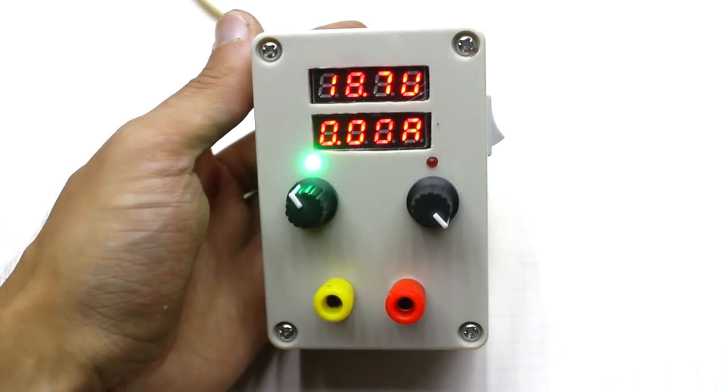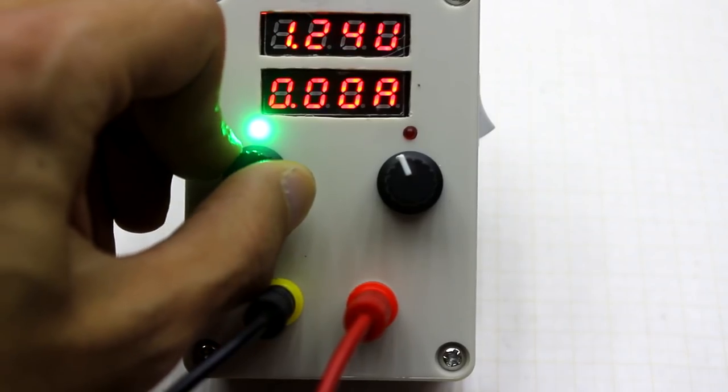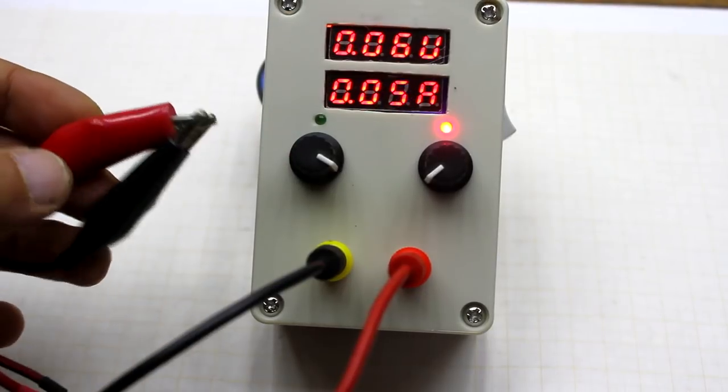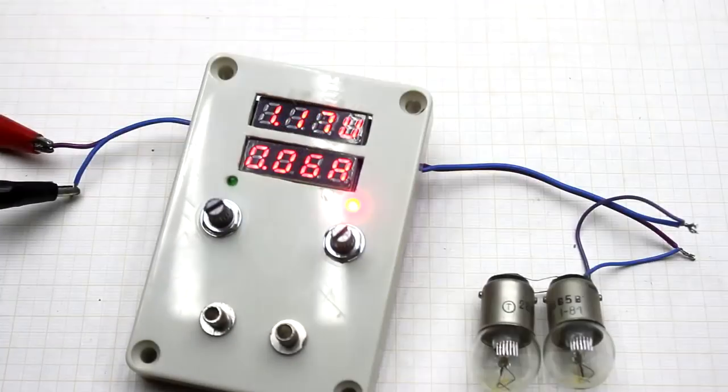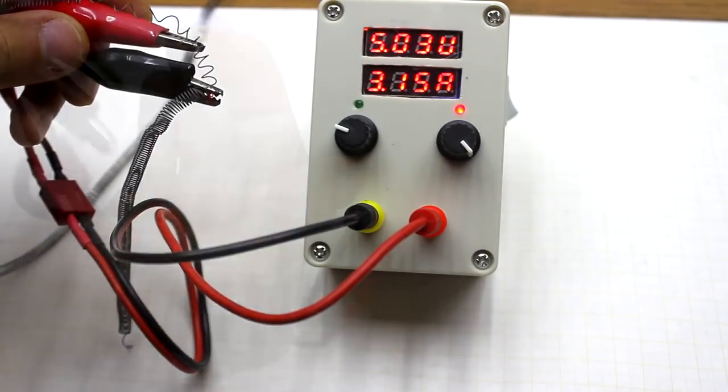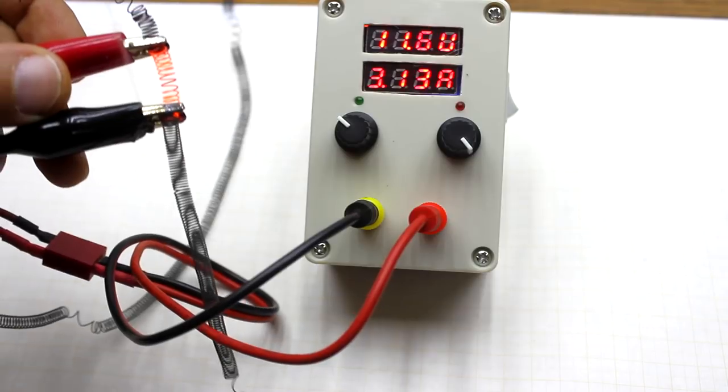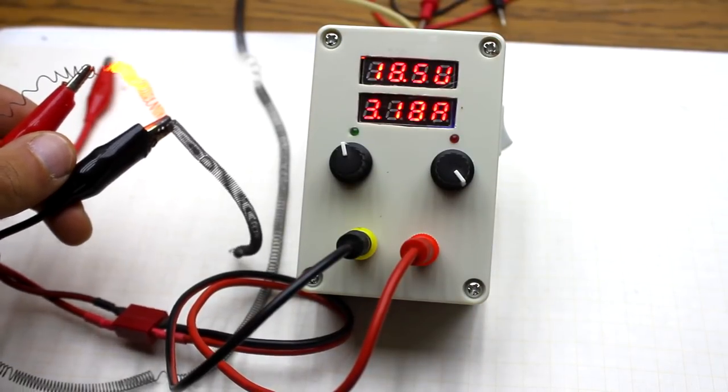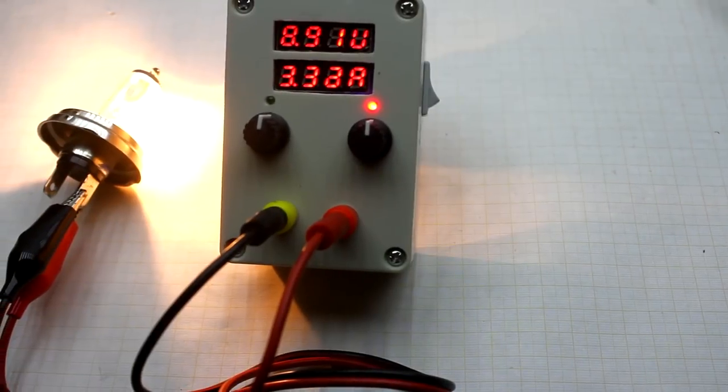The unit is ready. Now let's check what it is capable of. The minimum voltage is 1.2 volts. The maximum is 25. The adjustment is quite smooth. Now we will make measurements of the current. I chose three random voltages of 5, 12, and 20 volts.